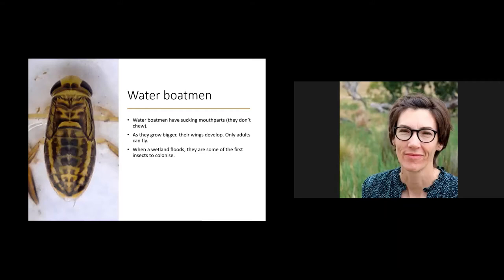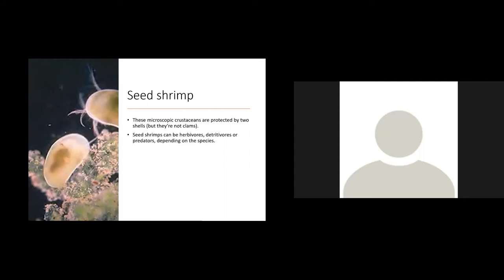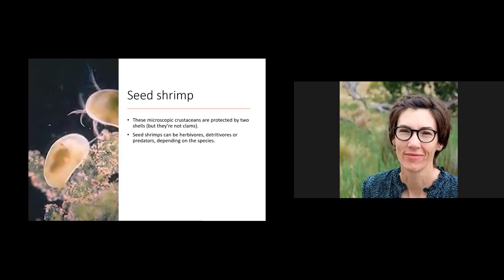Another organism we see quite often in the wetlands around here are the seed shrimp — tiny microscopic crustaceans protected by two shells, so they look like clams but they're actually shrimps, smaller than a match head. You can see their legs poking out, which they use to crawl along and pick up little bits of detritus or algae. Some are herbivores, some are detritivores, and some are even predators. The ones in the photo are white, but occasionally you might find a blue or green one.